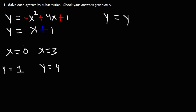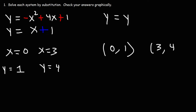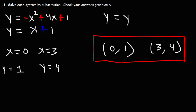So now we write the solutions as ordered pairs. When x is zero, y is one, giving us (0, 1). For the second solution, x equals three and y equals four, giving us (3, 4). Those are the two points that represent the solution to this system.